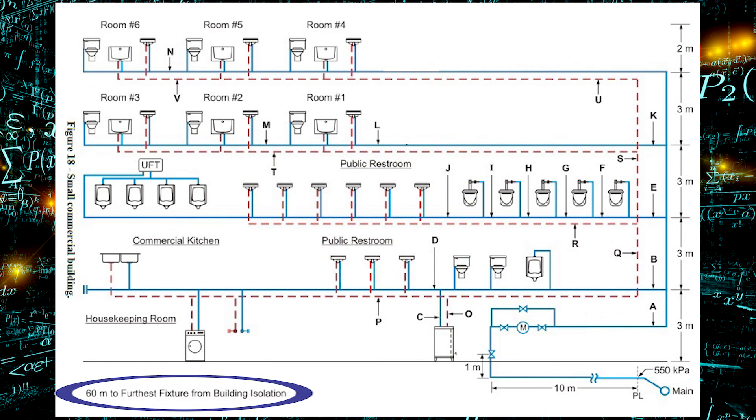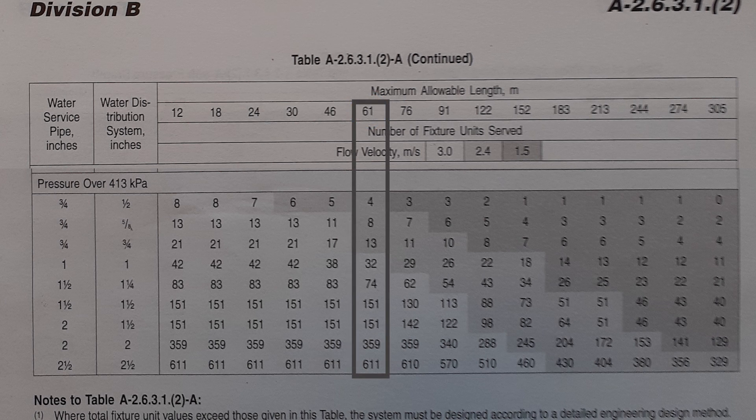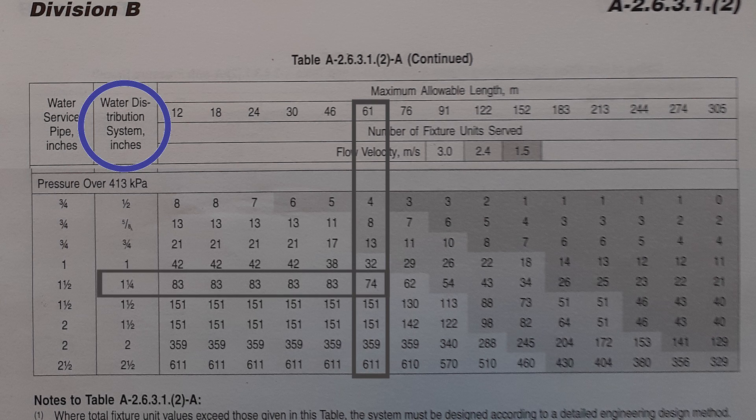If I look at the bottom left of the picture, 60 meters to furthest fixture from building isolation. So that will be my maximum allowable length of 60 meters. If I look along the top I see there's a slot for 61. So I come down the list until I get to the distribution size of one and a quarter. That is good for 74 fixture units with a 61 meter maximum allowable length. Inch and a quarter it is.